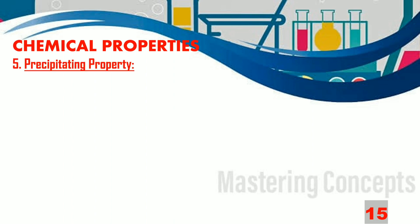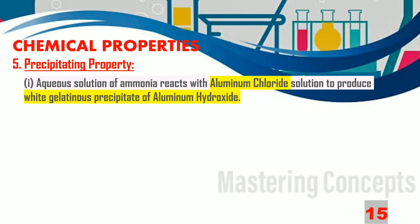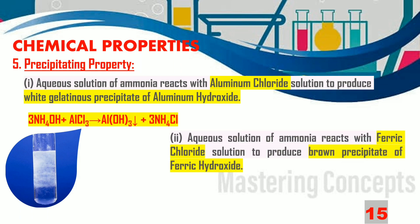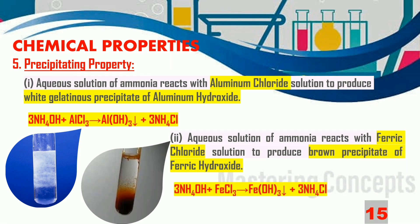Let us move on to the precipitating property of ammonia gas. Aqueous ammonia reacts with aluminium chloride to produce a white gelatinous precipitate of aluminium hydroxide: 3NH4OH + AlCl3 → Al(OH)3 + 3NH4Cl. Similarly, aqueous ammonia reacts with iron(III) chloride: 3NH4OH + FeCl3 → Fe(OH)3 + 3NH4Cl.